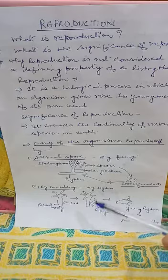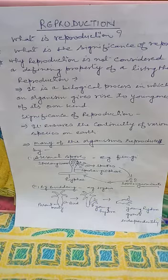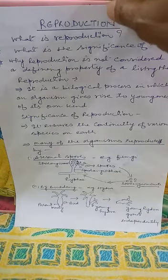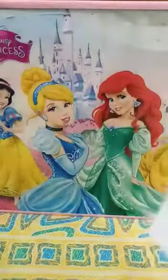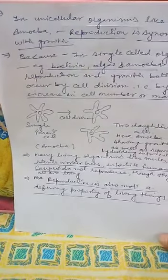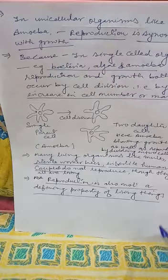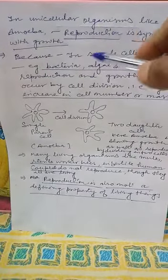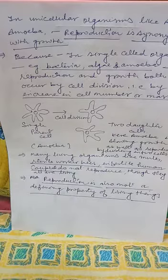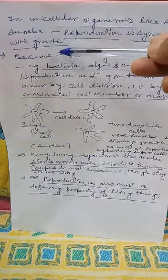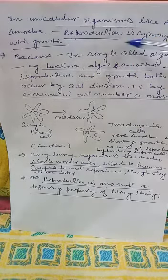When the bud develops fully, it gets detached from the parent body and grows independently. This is the mode of reproduction called budding. Now next, likewise in unicellular organisms like algae and amoeba, reproduction is synonymous with growth. This is a very important point.